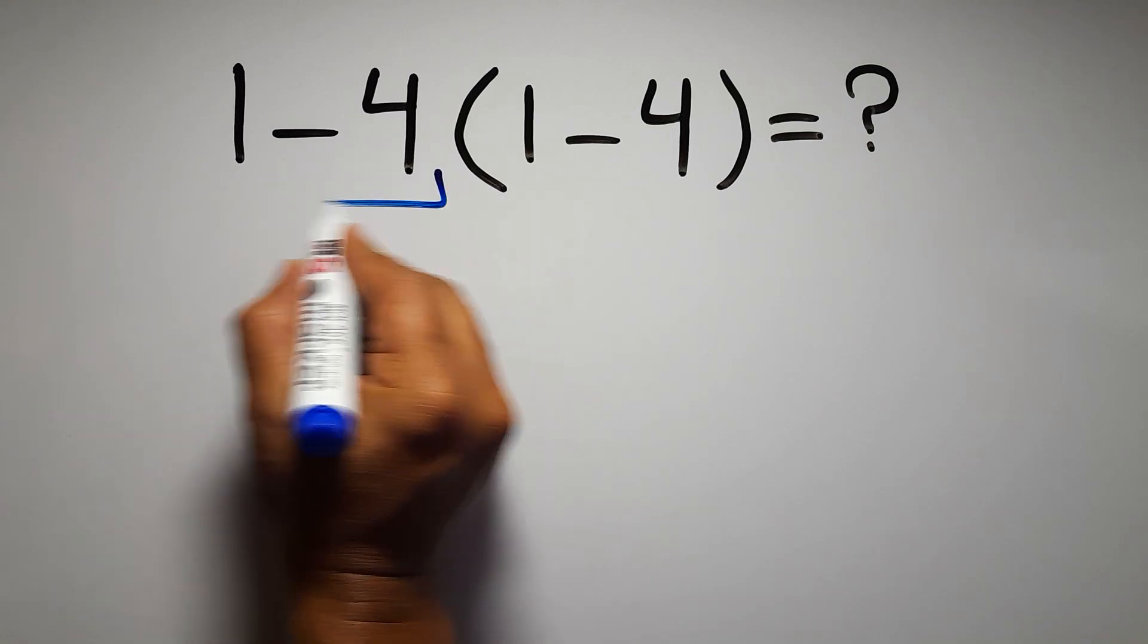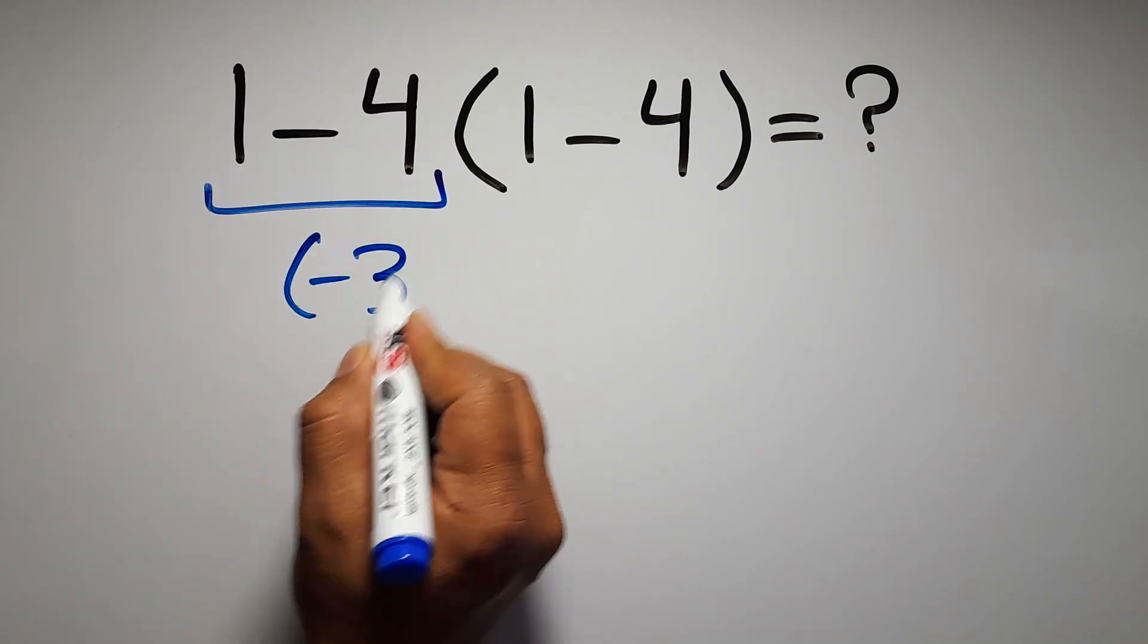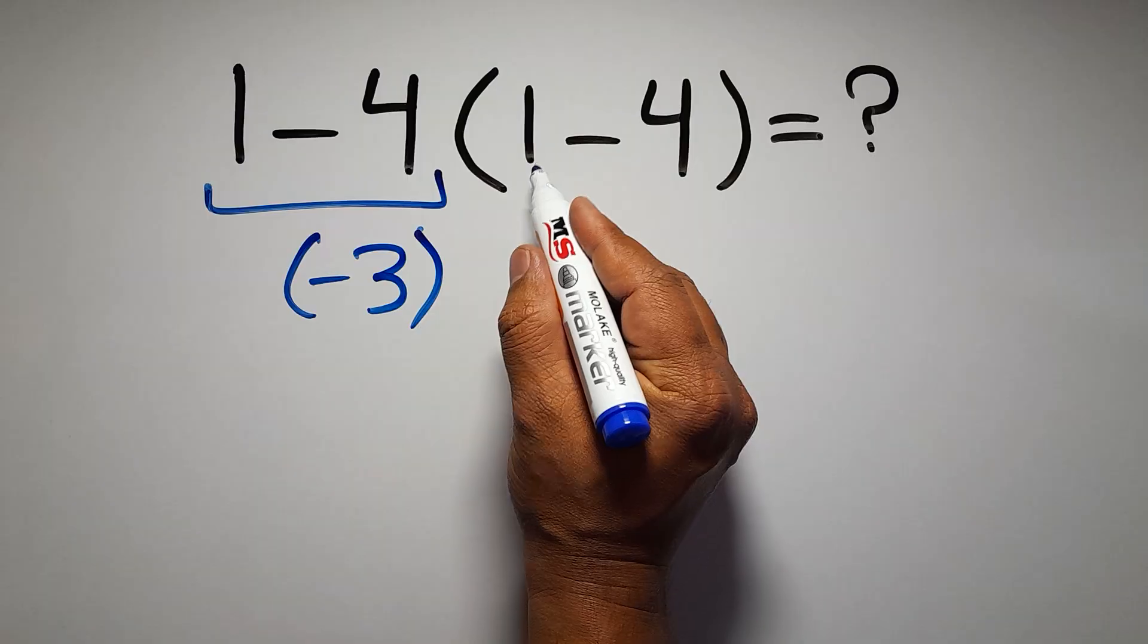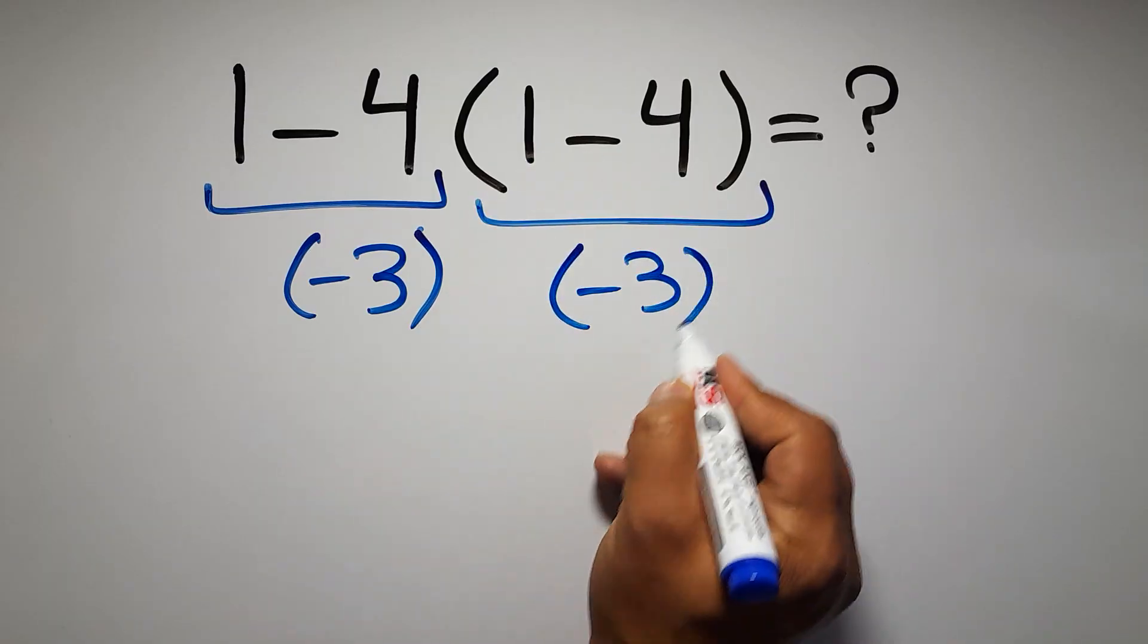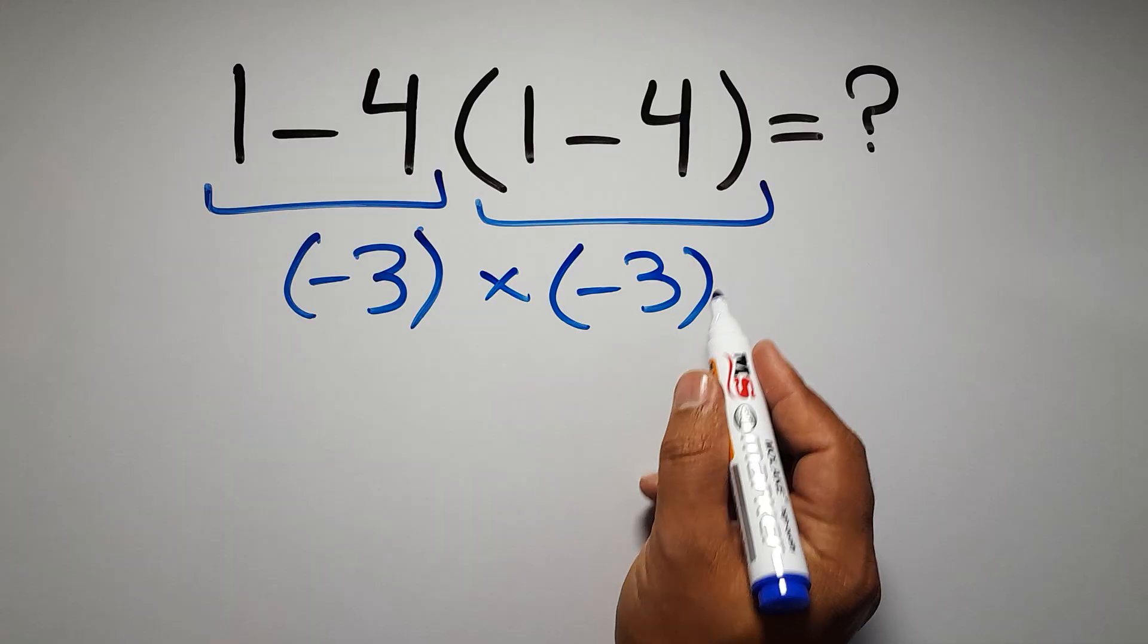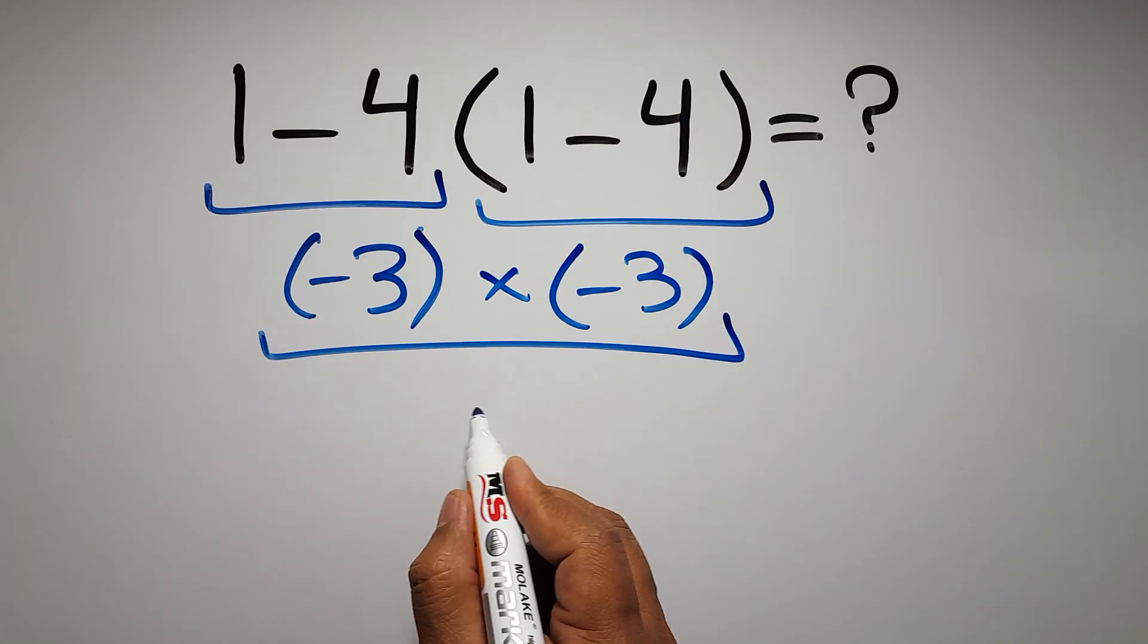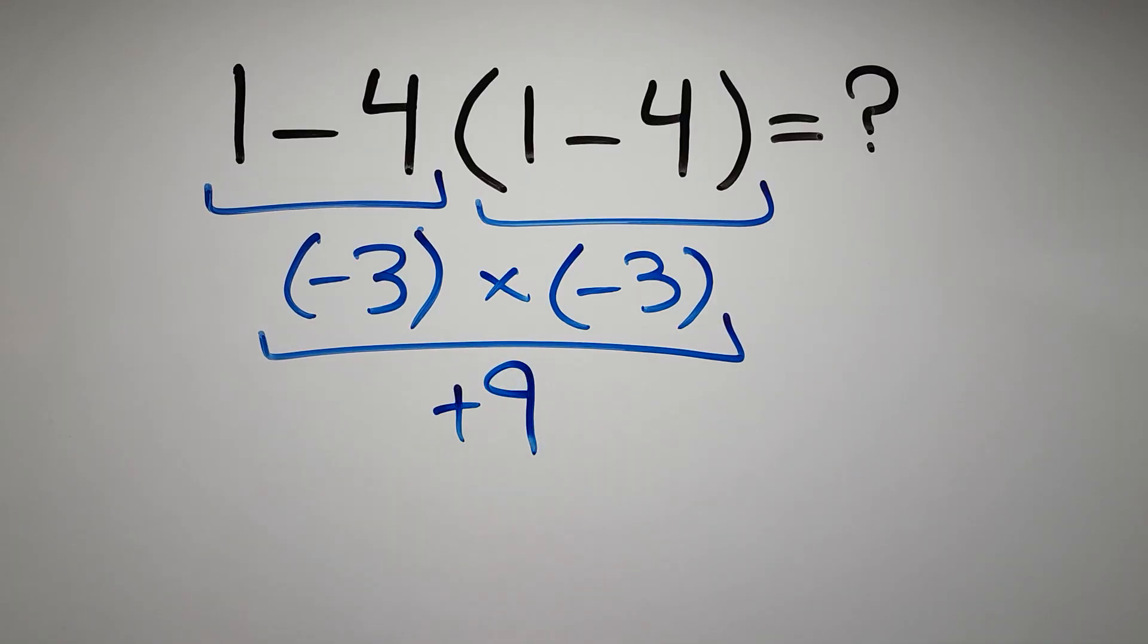1 minus 4 gives us negative 3, and again here inside this parentheses we have 1 minus 4. Negative 3 times negative 3 gives us positive 9, but this answer is not correct because according to the order of operations...